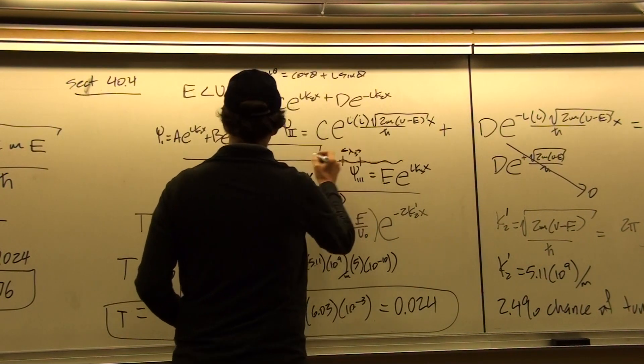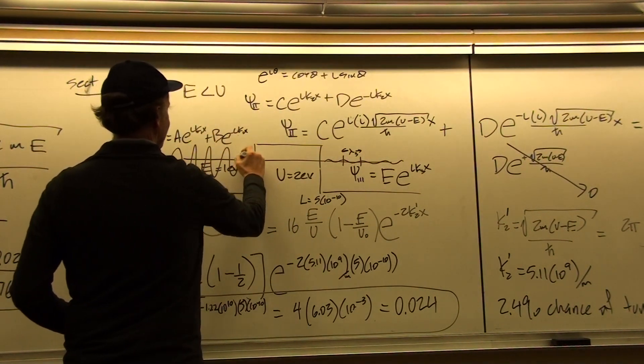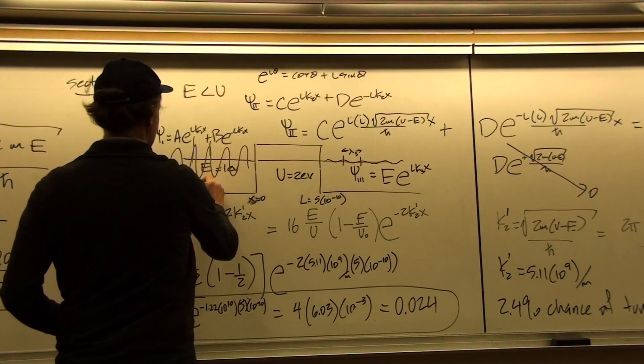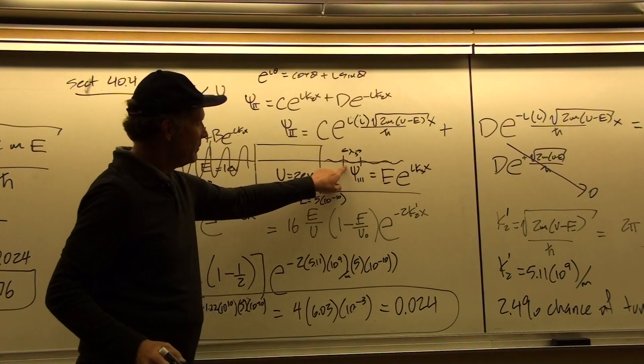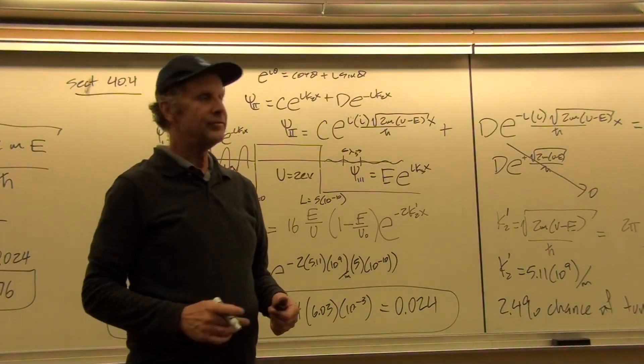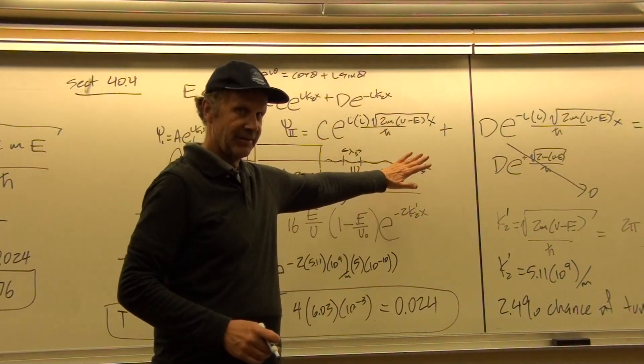So this is lambda 3, this is lambda 1, and they're the same. So that means the velocity of the particle is the same but only 2.4 times out of 100 will you find it in a measurement on this side. And the rest of the time you'll find it as a reflective electron wave on this side.